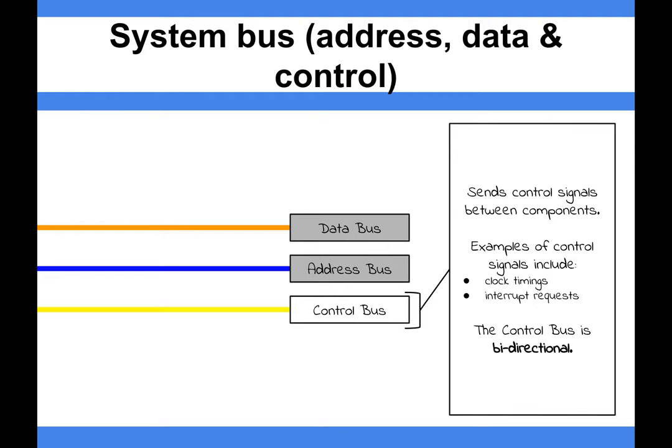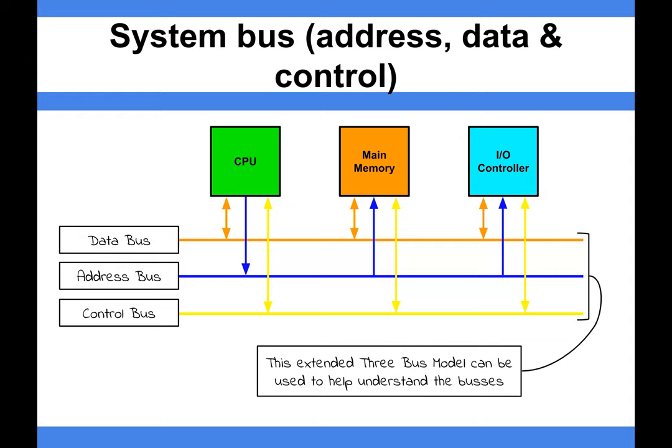The control bus is bi-directional. Now that's them as a concept. If we look at a three box model to help us understand how these work, you've got your CPU,